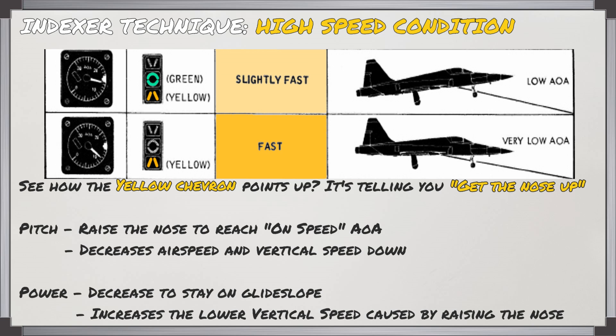In the high speed condition, you're going to see a yellow chevron pointing up, telling you to get the nose up. To adjust your pitch, you'll raise the nose to reach the on-speed angle of attack. This will decrease your airspeed and vertical speed downwards, so you counteract that with power by decreasing it to help you stay on glide slope and manage the lower sink rate induced by raising the nose.